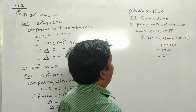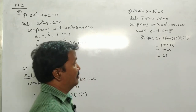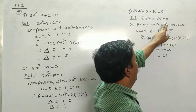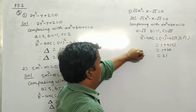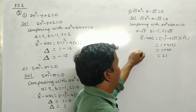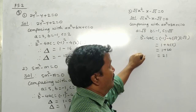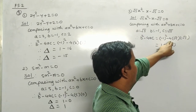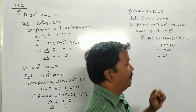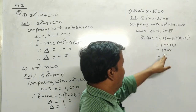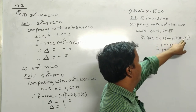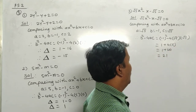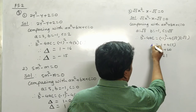Third equation: √5·x² - x - √5 = 0. Comparing with ax² + bx + c = 0, a = √5, b = -1, c = -√5. Discriminant = b² - 4ac = (-1)² - 4×√5×(-√5) = 1 + 4×5 = 1 + 20 = 21.